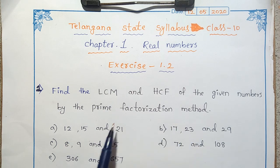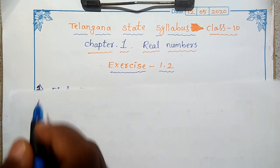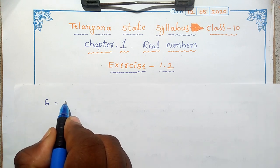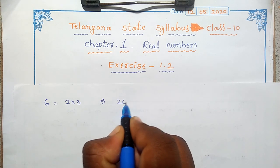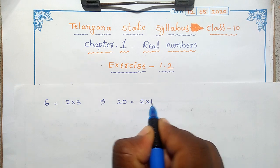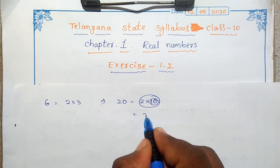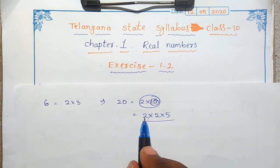First we have to know what is the prime factorization method. If a number is given, we have to write that number as a product of prime numbers. For example, 6 can be written as 2 into 3. Suppose 20 is there — if I write it as 2 into 10, this is not prime factorization because 10 is not a prime number. We write it as 2 into 2 into 5. This is the prime factorization, because all numbers here are prime numbers.